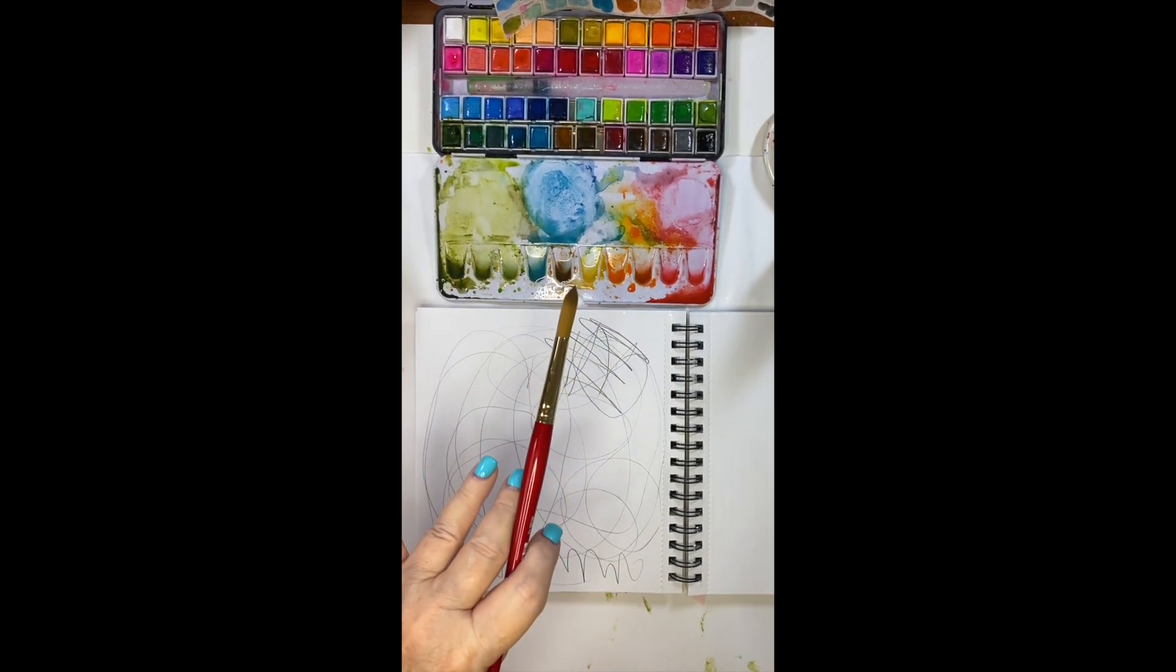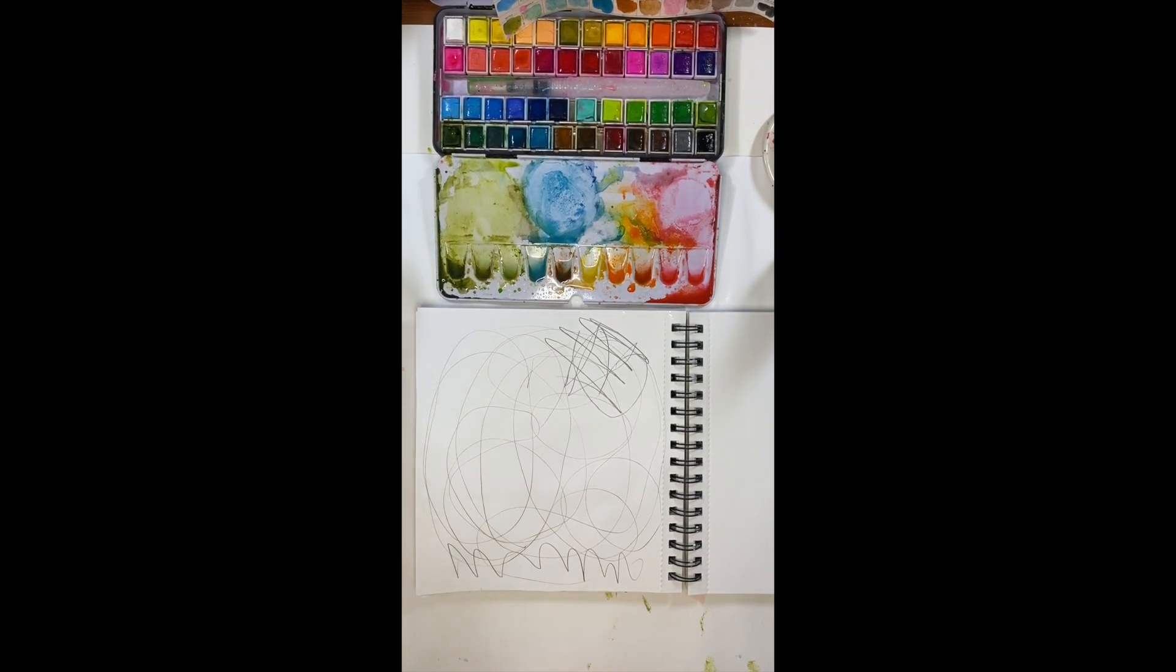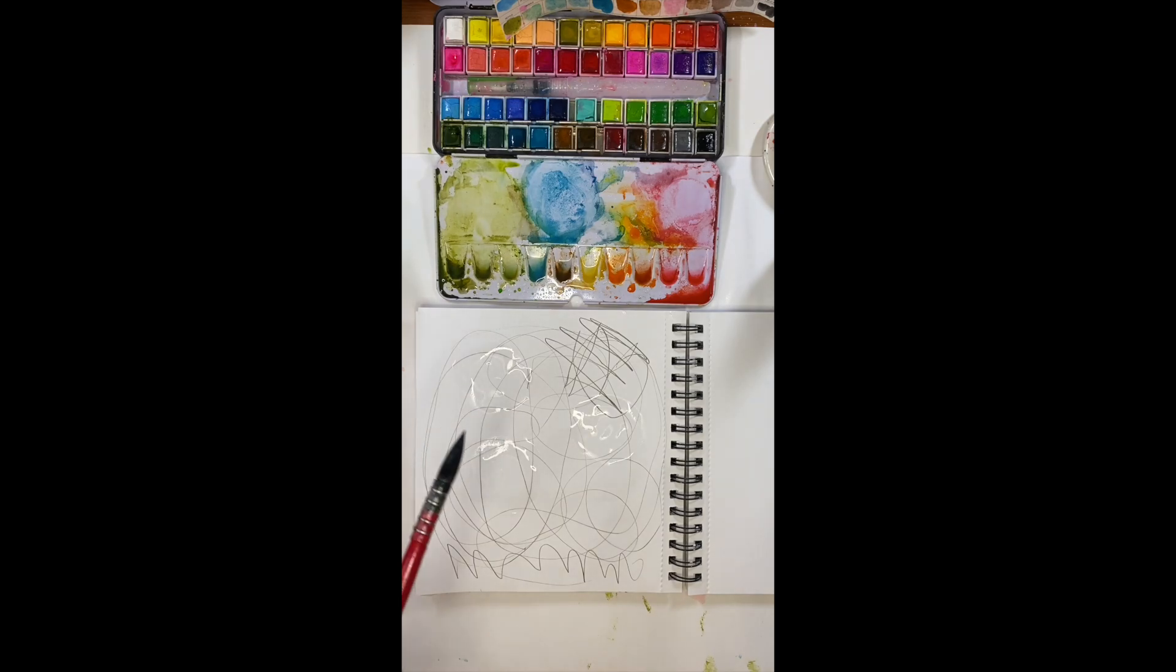And I'm taking my round brush here. I'm going to dip it in the water, take these out. And I'm going to paint with water three or four circles. It doesn't matter. You want to have it somewhat saturated. And then I'm going to take a smaller brush. You know what? I'm going to use the same brush.